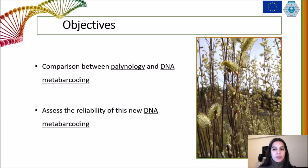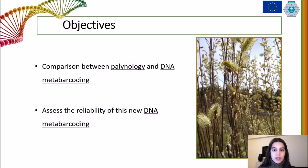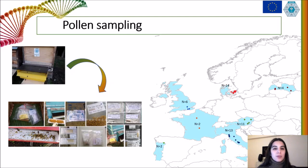Whether DNA metabarcoding provides reliable botanical identification of bee-collected mixed pollen pellets is uncertain, with very few papers looking into this matter. Therefore, before DNA metabarcoding could be used in the INSIGNIA project to identify citizen scientist samples collected across Europe, it was important to compare it with standard palynology — and this was the main goal of this study. To achieve this goal, 61 pollen samples were collected from pollen traps set up in front of beehives from eight European countries in an attempt to capture a wide botanical diversity.